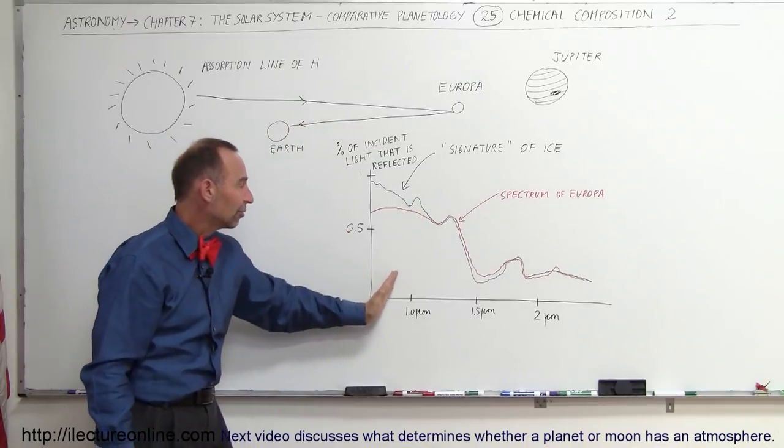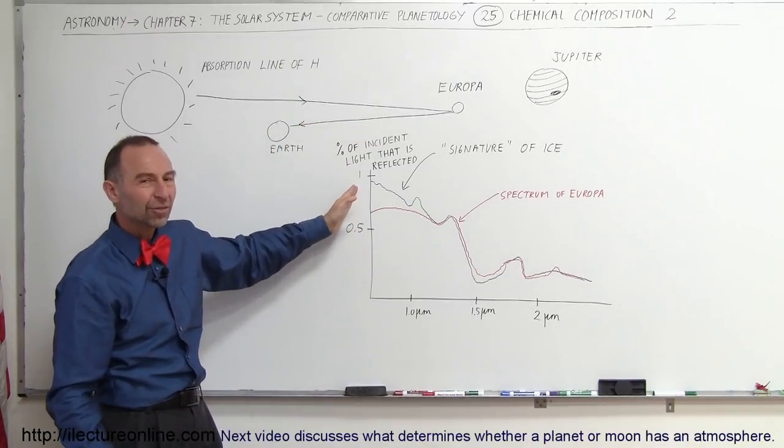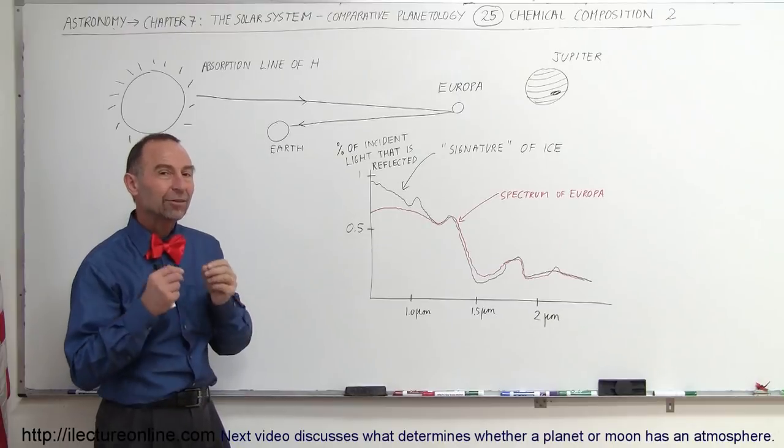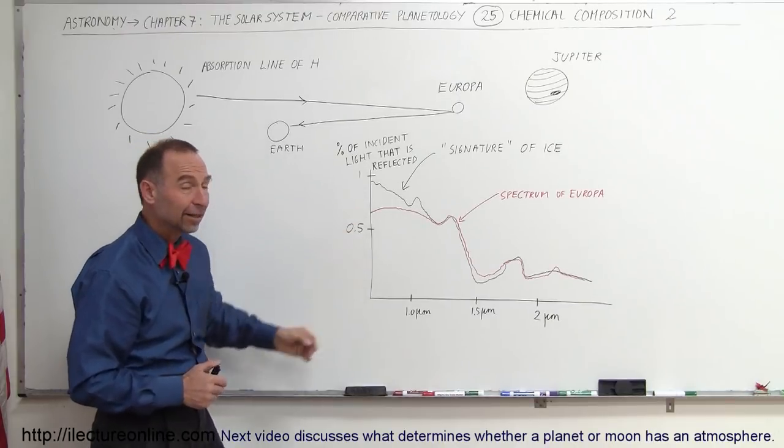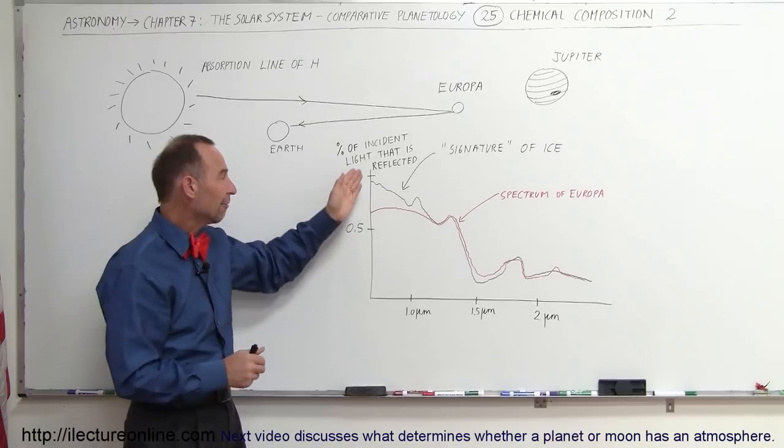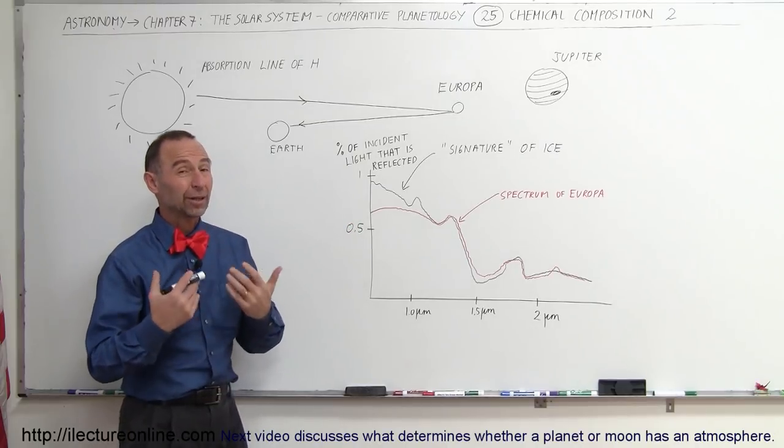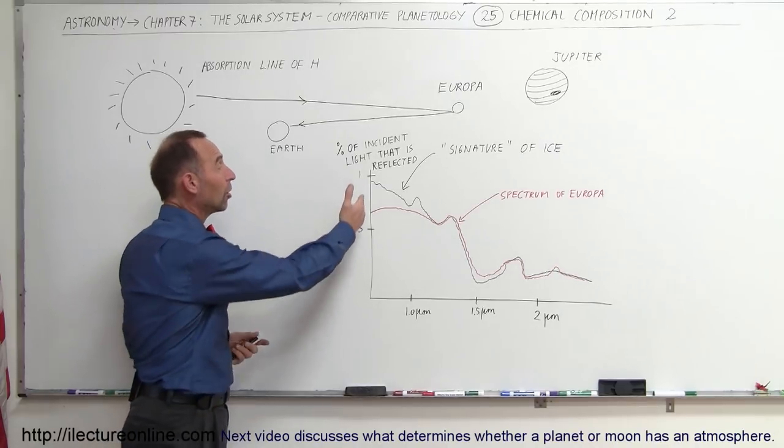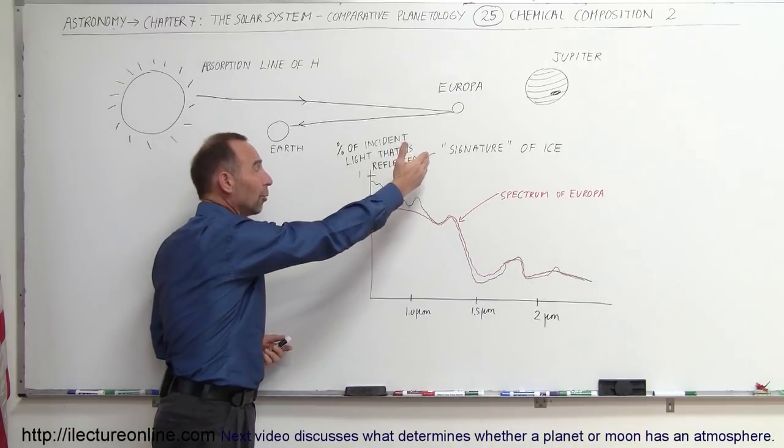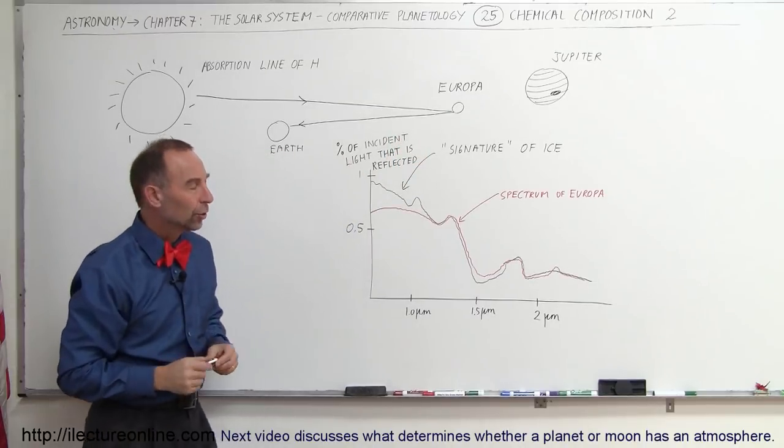Notice that on some of these frequencies, almost 100% of the light gets reflected. It's about 95% in this particular band, which would be very nearly the visible light band. You can see on the visible light spectrum that almost all of the light that is inbound on Europa gets reflected back to Earth.